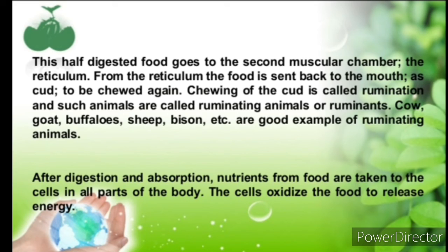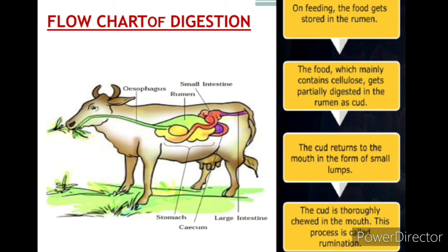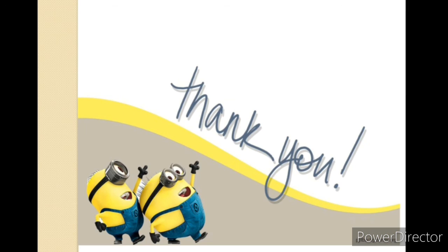This is a flow chart showing how digestion takes place in ruminants. On feeding, the food gets stored in the rumen. The food, which mainly contains cellulose, gets partially digested in the rumen. As cud, it returns to the mouth in the form of small lumps. The cud is thoroughly chewed in the mouth. This process is called rumination.